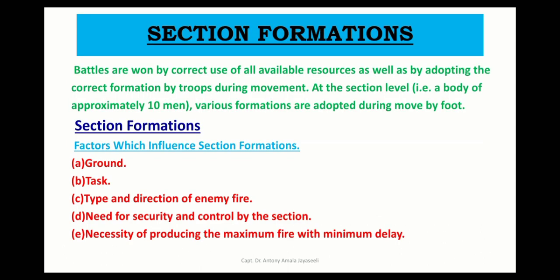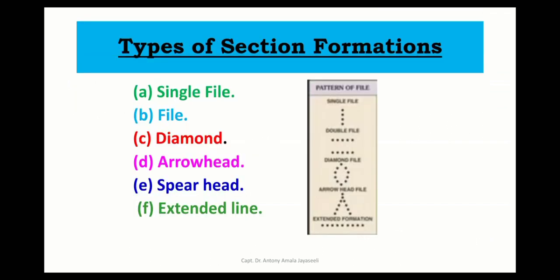Moving on to section formations, these are adopted by troops during their movement. At the section level — approximately a body of 10 men — various formations are adopted. The factors which influence section formation are the ground, the task, the type and direction of enemy fire, the need for security and control of the section, and the necessity of reducing the maximum fire with minimum delay. The different types of section formation are single file, diamond, arrow shape, spearhead, and extended line.